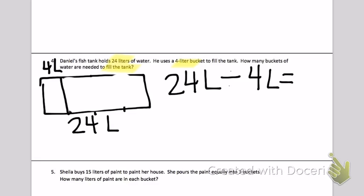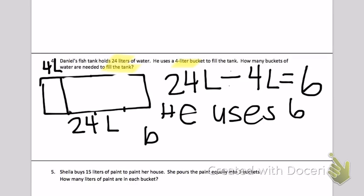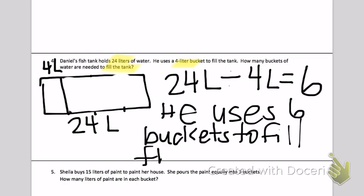So I have my 24 liters divided by my four-liter bucket. I can count by fours until I get to 24 to find my groups. 4, 8, 12, 16, 20, 24. That's going to give me six. So I'm going to write, He uses six buckets to fill the tank.